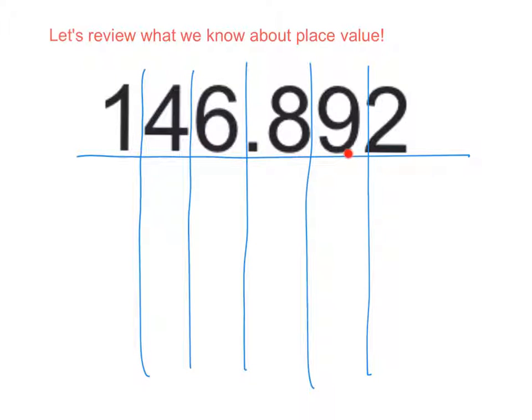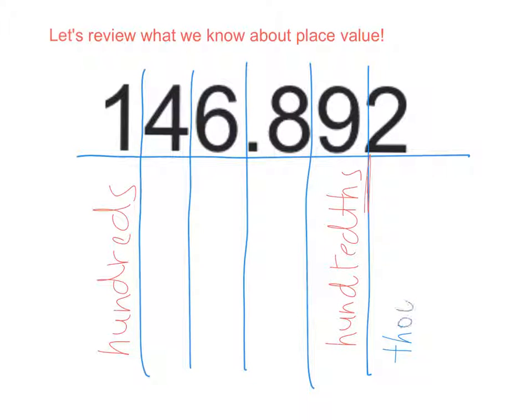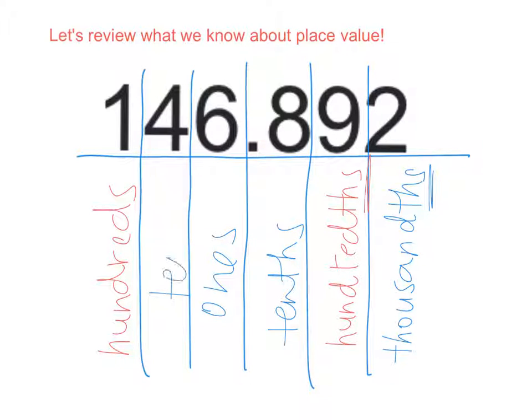What's the difference between this place value and this place value? The hundredths, it has a T-H-S. Yeah, we have to be careful. This one's the hundredths, has the extra T-H, whereas this one is just the hundreds. Good. And then the 2 is in the thousandths. And then we said this one was the tenths, this one's the ones, and this is the tenths. Good.